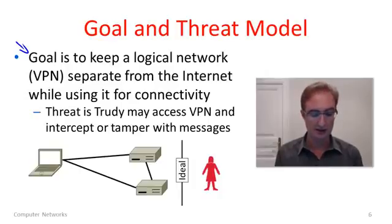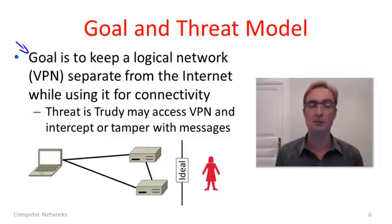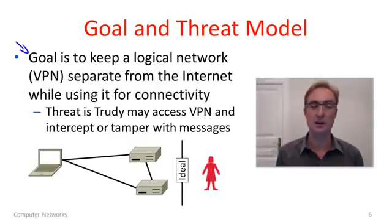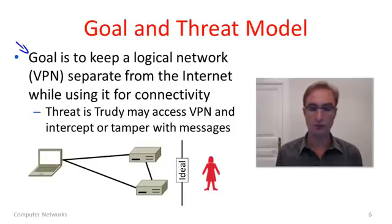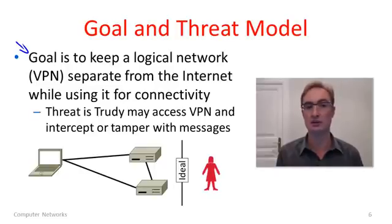The threat here is that Trudy, who is also on the public internet, will somehow be able to send packets from the public internet to your VPN, or vice versa — she'll be able to get packets out of your VPN and understand what they're saying, read the contents of messages, and so forth. In the ideal case, we'll perform this separation so that Trudy is on one side and our VPN is on the other side, as though it was composed of physical leased lines.